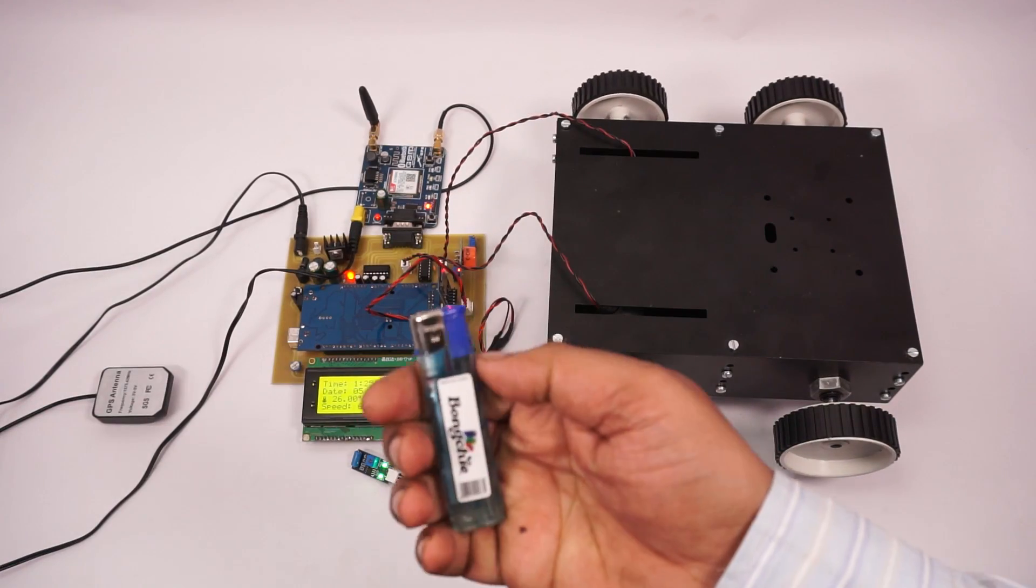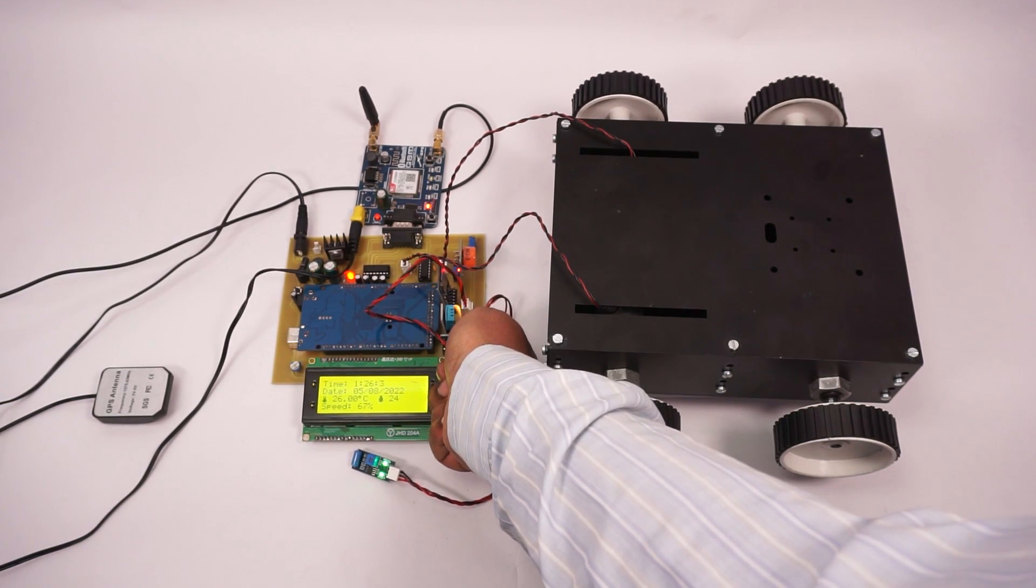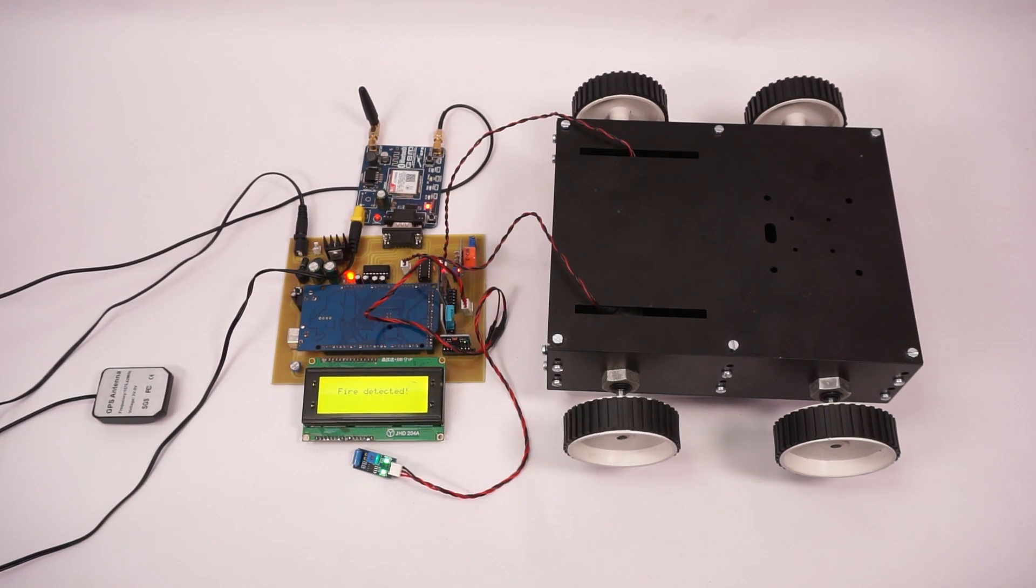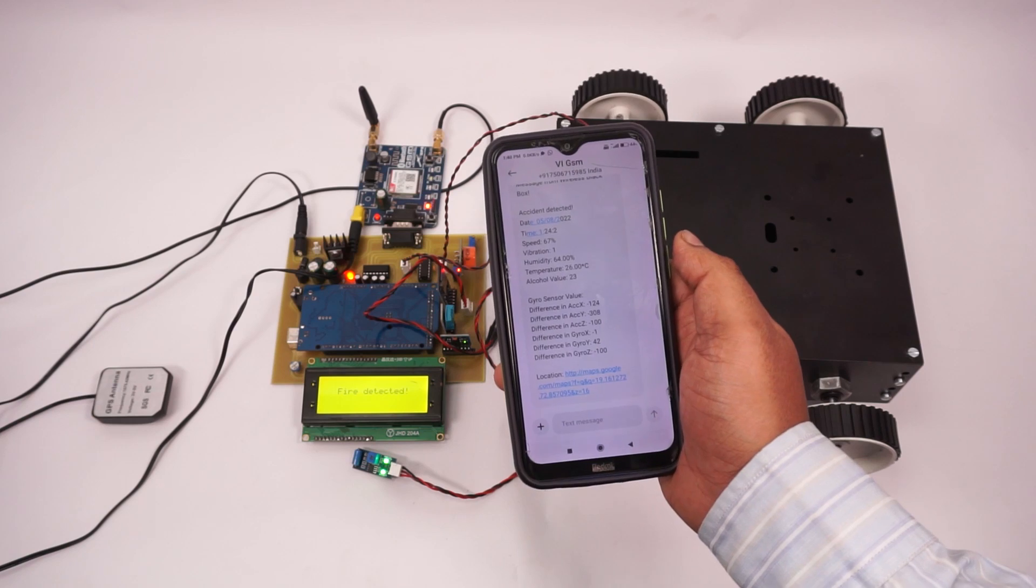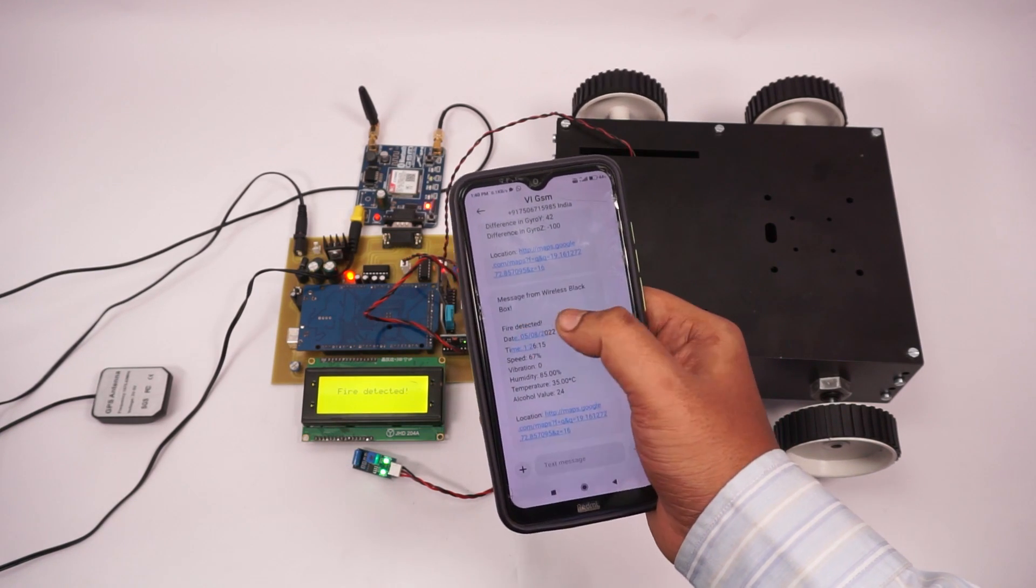Next, we will simulate fire. Suppose the car caught fire or there was a fire incident. So now, in this case, again, we are gonna get a fire alert notification through SMS along with the GPS coordinates of where it was detected.